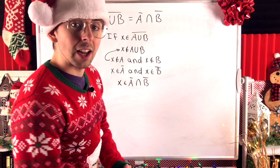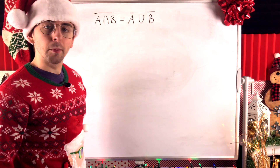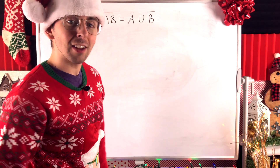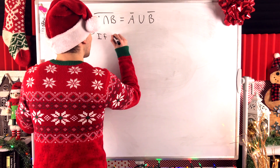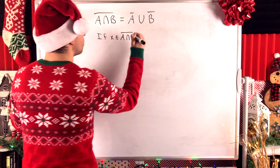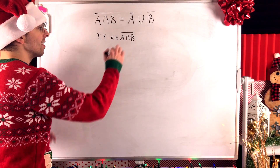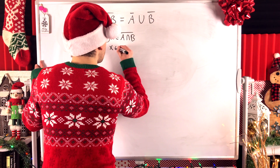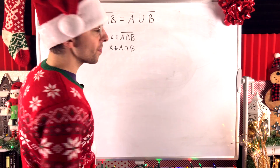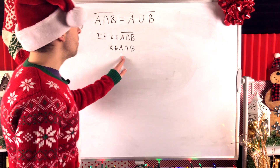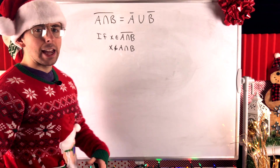Let's move on to proving the other statement of DeMorgan's Laws. We want to show that the complement of A intersect B equals A complement union B complement. To do that, we'll show they're both subsets of each other, just like before. We begin by showing the complement of A intersect B is a subset of A complement union B complement. If x is an element of the complement of A intersect B, then by definition of set complement, x is not an element of A intersect B.